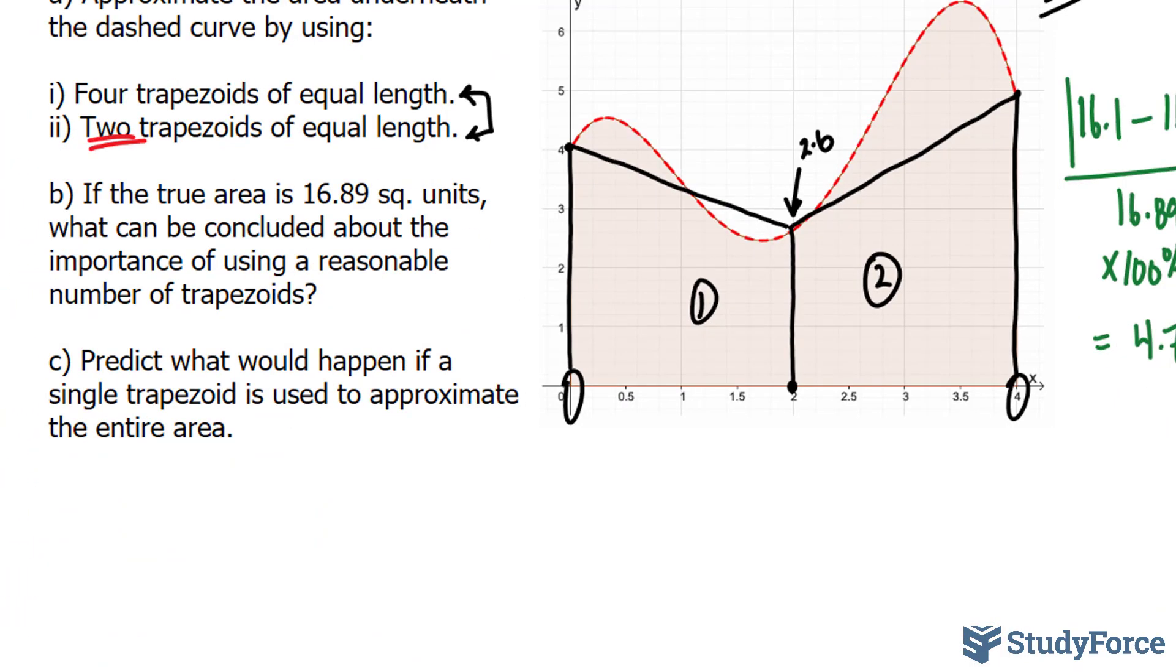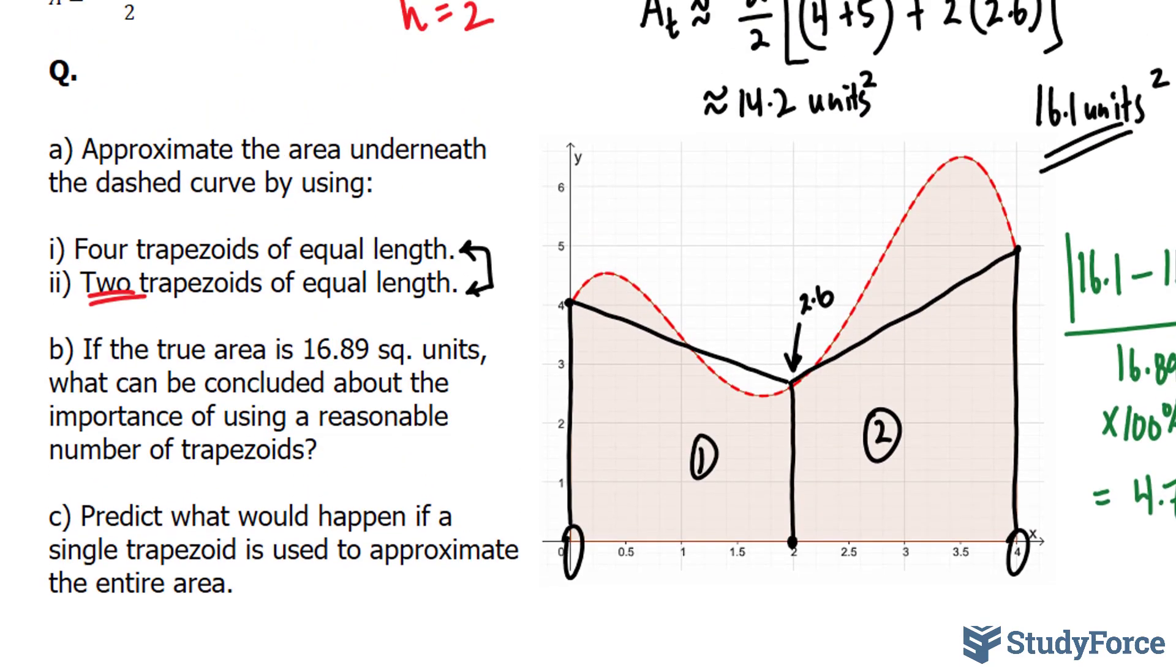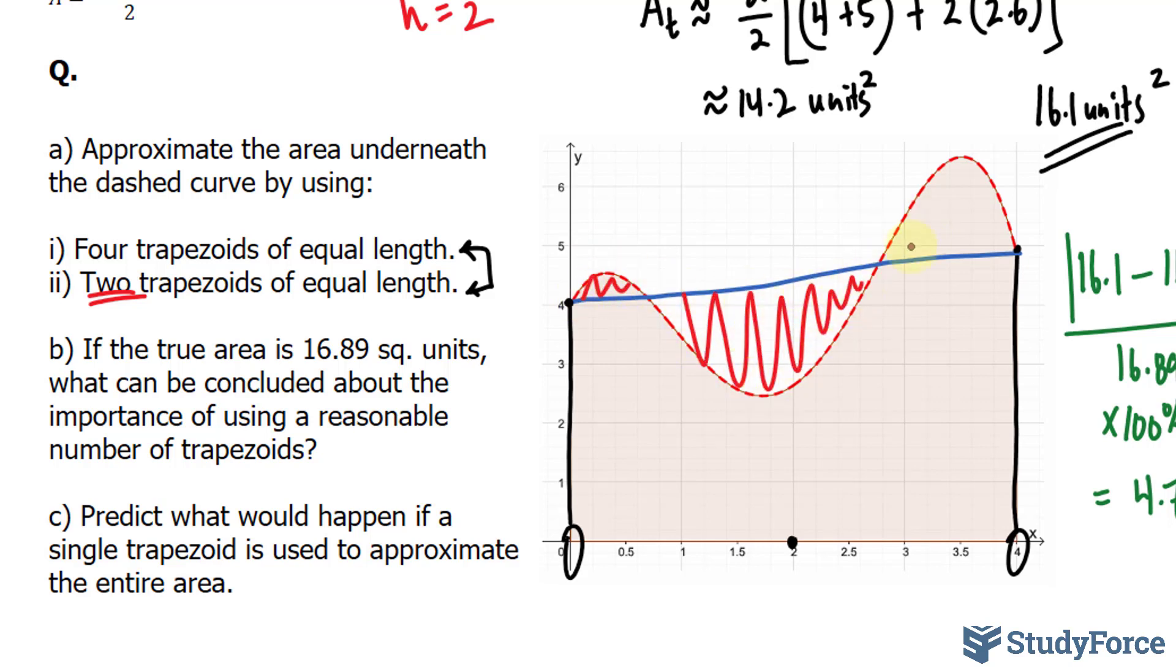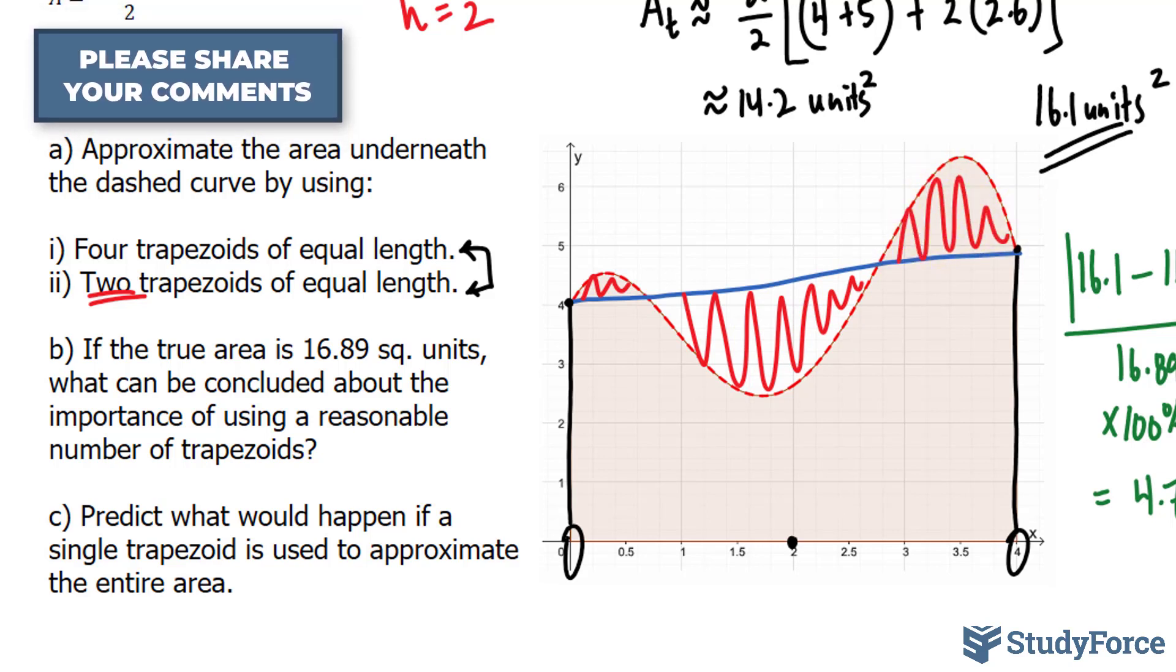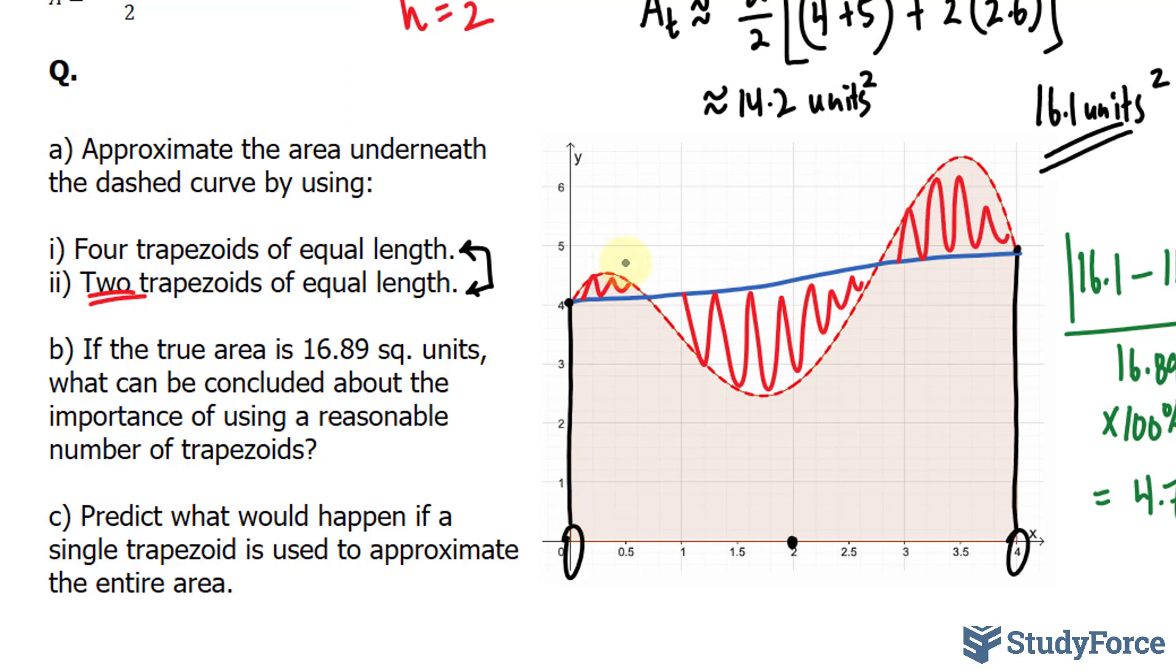And finally, for question C, predict what would happen if a single trapezoid is used to approximate the entire area. So let's just erase our markings and extend the line from here to here. If you do that, you'll notice over here that we are underestimating. Over here, we are overestimating. And underestimating here. Because the overestimation is larger than these two combined, we can make a prediction that with a single trapezoid, we'll end up with an overapproximation of the area. So you would expect the area likely to be greater than 16.89 if you use only a single trapezoid.